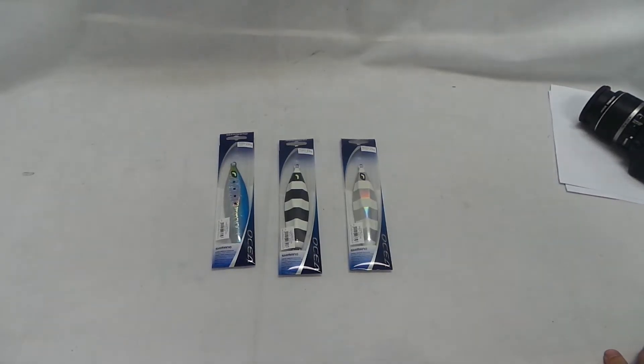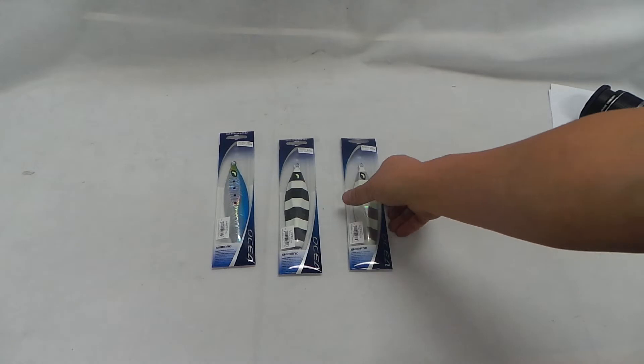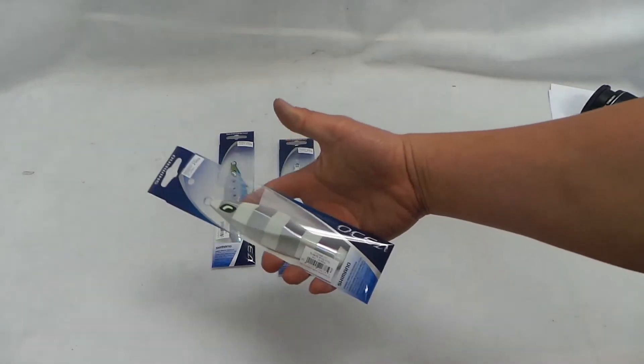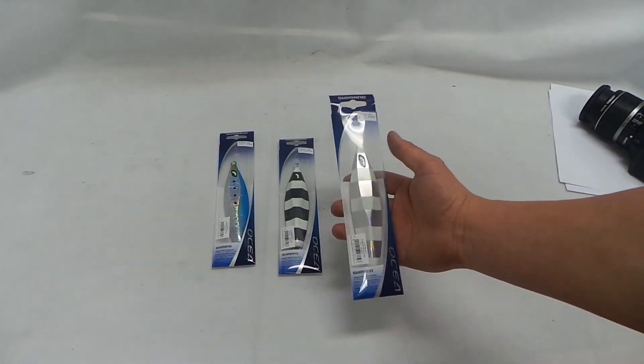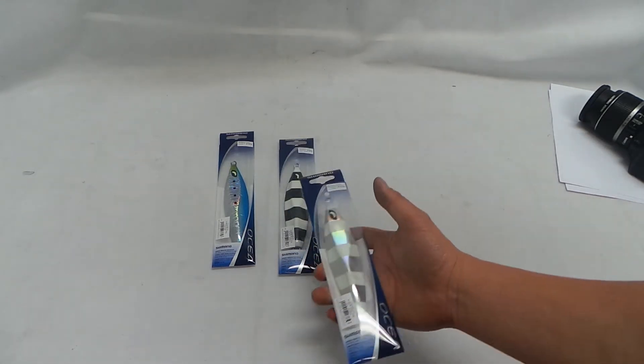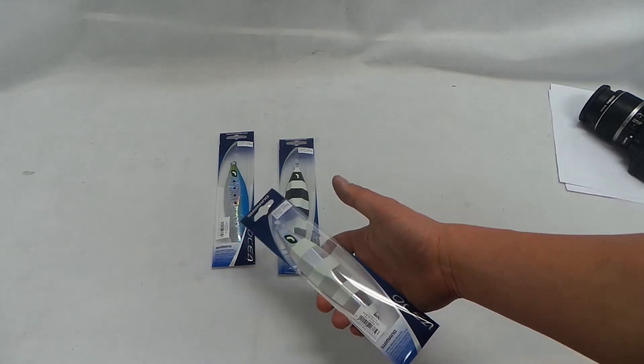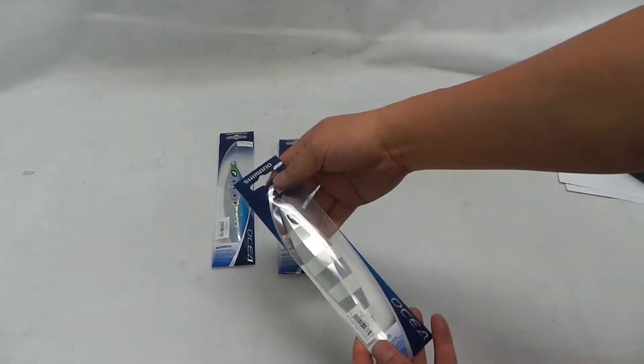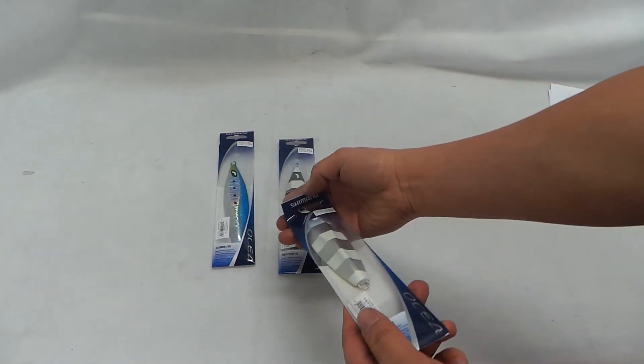Hi guys, this is new from Shimano. It's the Osher wing lures. For more information on these, please read the descriptions or go to the Shimano website. But this is more of a visual video, so you can actually see the lures.